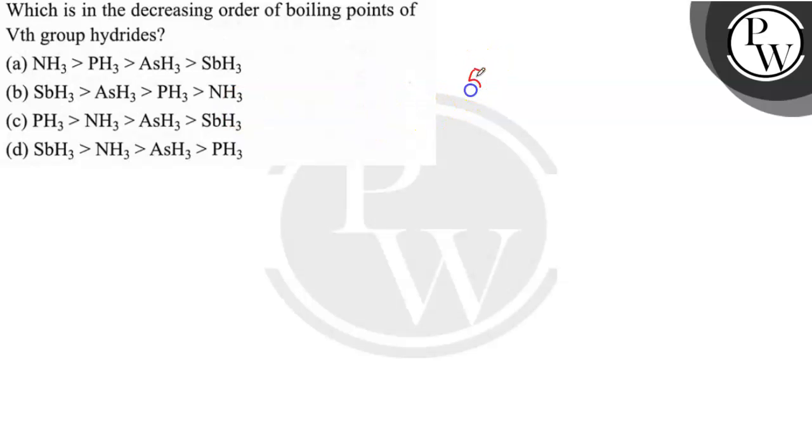The question asks which is in the decreasing order of boiling points of 5th group hydrides. In the 5th group we have nitrogen, phosphorus, arsenic, and antimony.